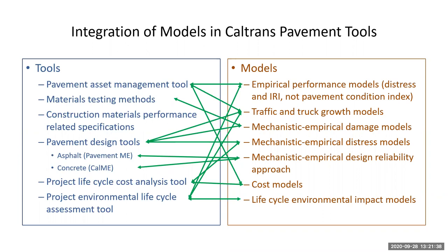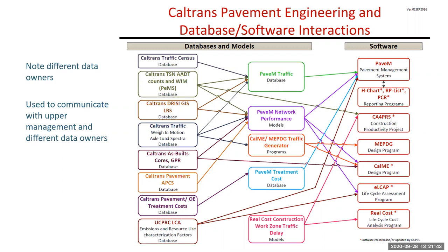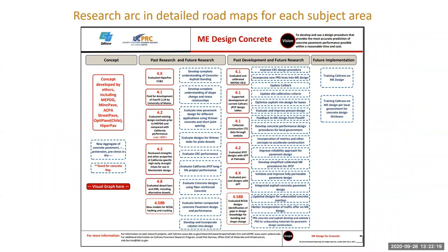The same thing applies to models. This is the mapping of the different models we use — many models we want to be able to use across different tools. We want a roughness model, an IRI model we're using in the asset management system to be the exact same model when we're predicting pavement-vehicle interaction and greenhouse gas and air pollution from vehicles using the pavement in the life cycle assessment tool. If we're using different models, we get different answers — confusing. So this is the integration of the models, communicated to upper management by showing databases on the left, models in the middle, and software on the right.